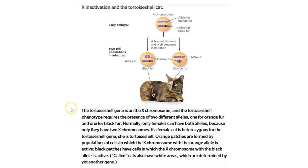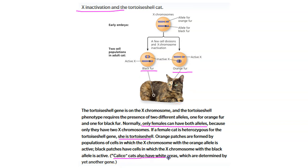Here's another example. Females have two X chromosomes, and early in development one X becomes inactivated because you don't need double the DNA for these genes — if only one X is needed for life. Normally only females have both alleles because they have two X chromosomes. If a female cat is heterozygous for the tortoiseshell gene, she is tortoiseshell. The active X may express black fur in some cells and orange fur in others — that's where you get the calico cat pattern. These are also known as calico cats.